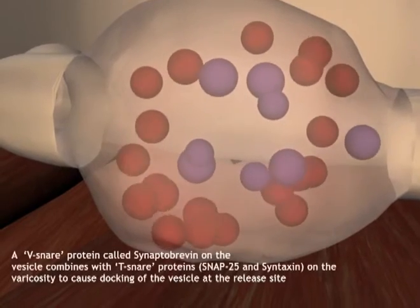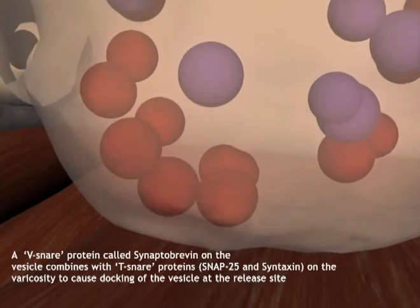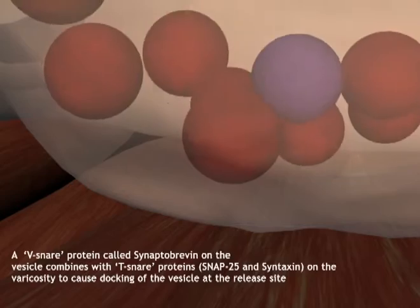A V-SNARE protein called synaptobrevin on the vesicle combines with T-SNARE proteins SNAP25 and syntaxin on the varicosity to cause docking of the vesicle at the release site.